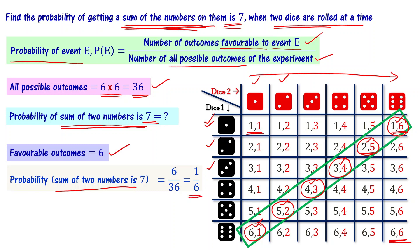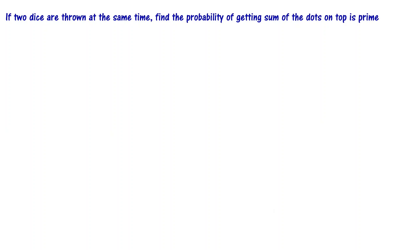Now let's look at the second problem: if two dice are thrown at the same time, find the probability of getting the sum of the dots on top is a prime number.